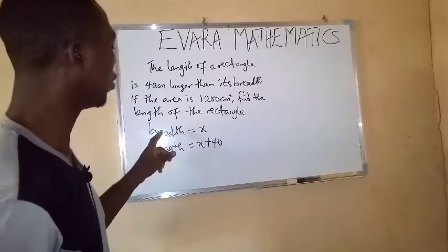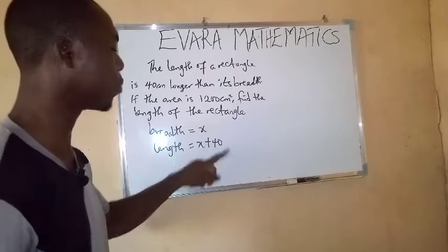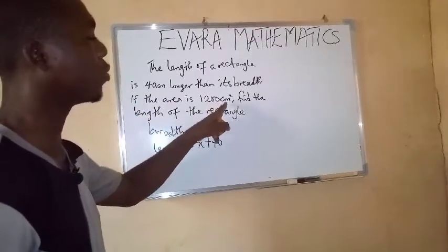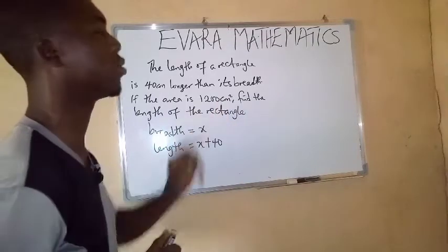So this is the breadth, x, and this is the length, x plus 40. And we are told that the area of the rectangle is 1,200 cm squared.